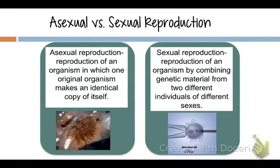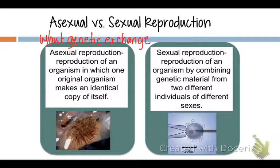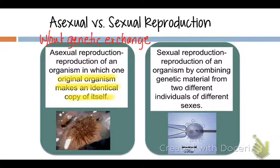Asexual versus sexual reproduction. Asexual reproduction literally means without sex — without an exchange of genetic material. What you'd want to write down is that asexual reproduction occurs without an exchange of any genetic material, and the end result is an organism that's just copied itself.